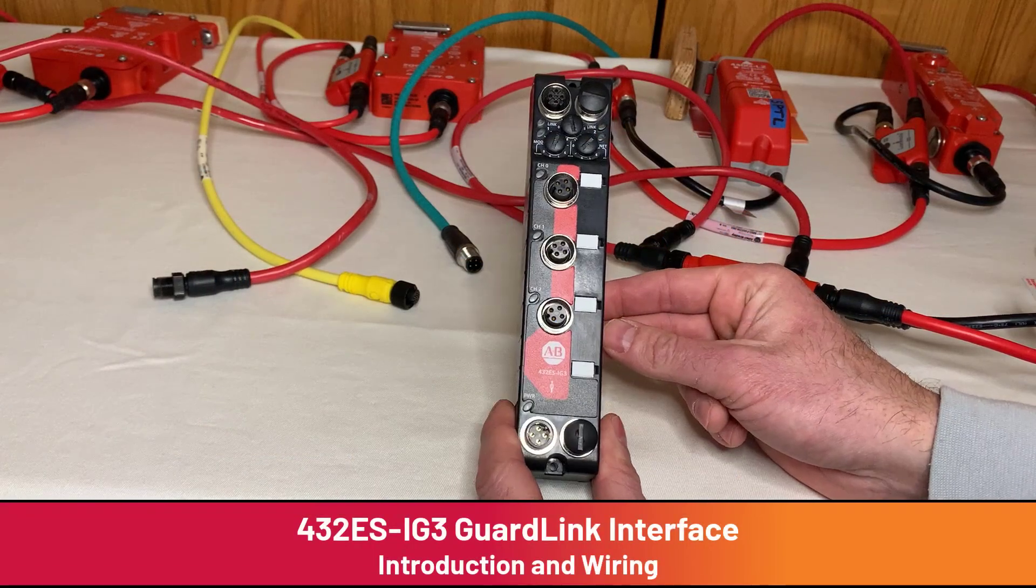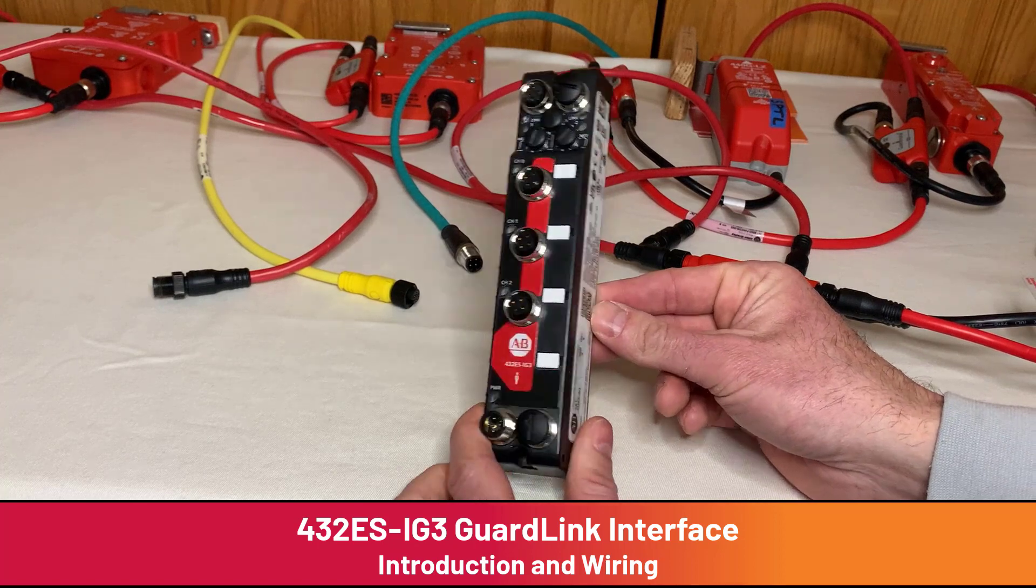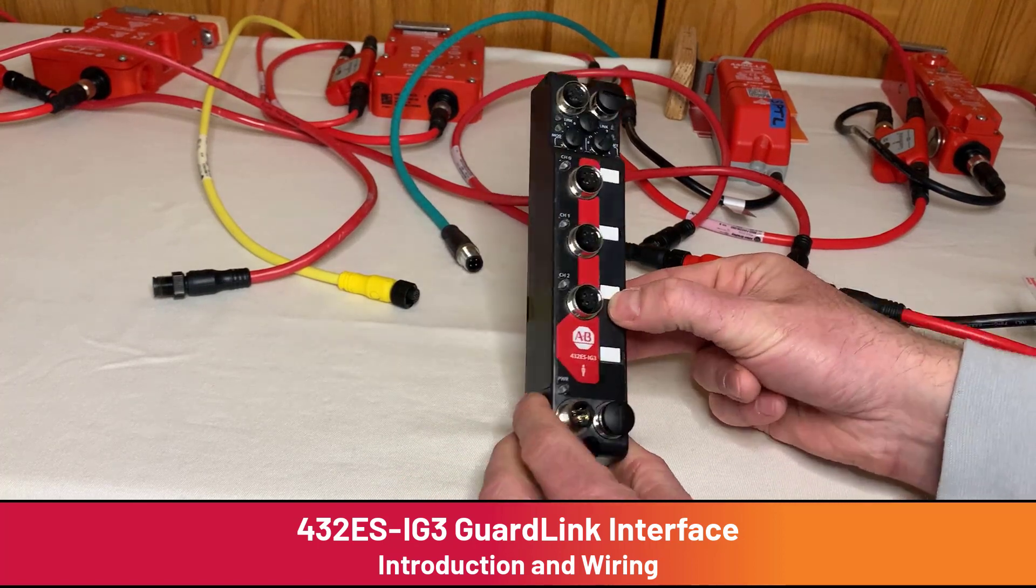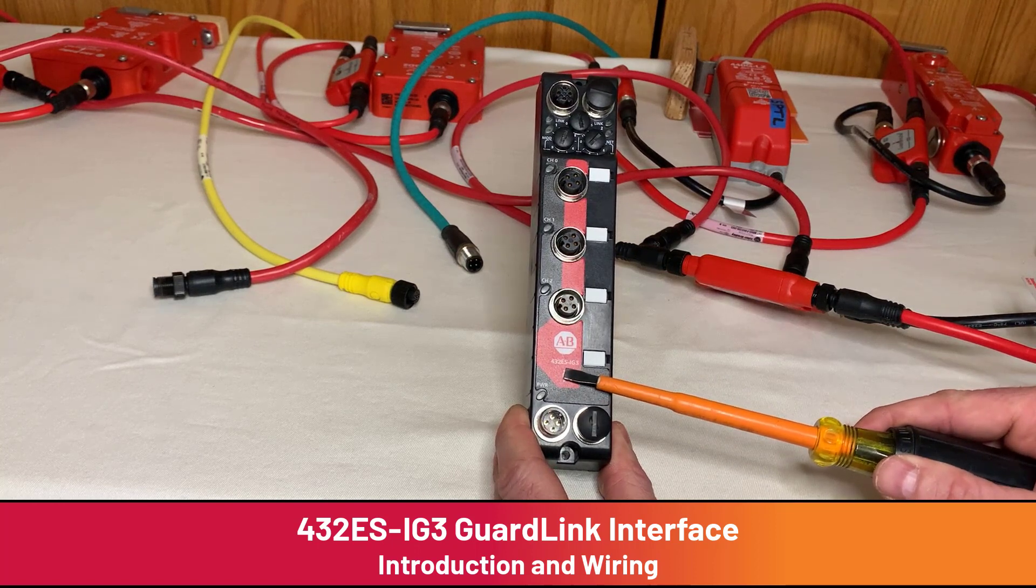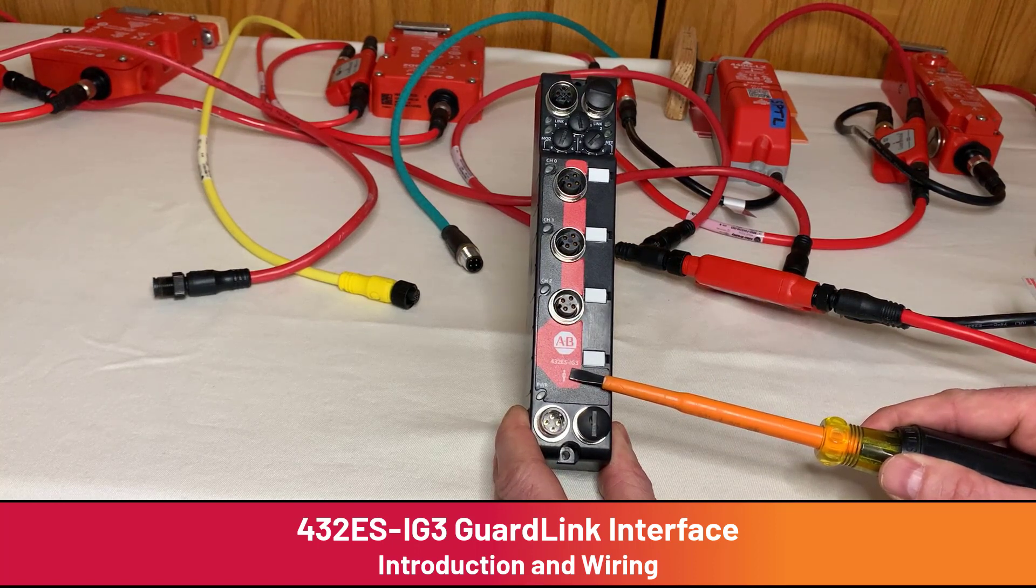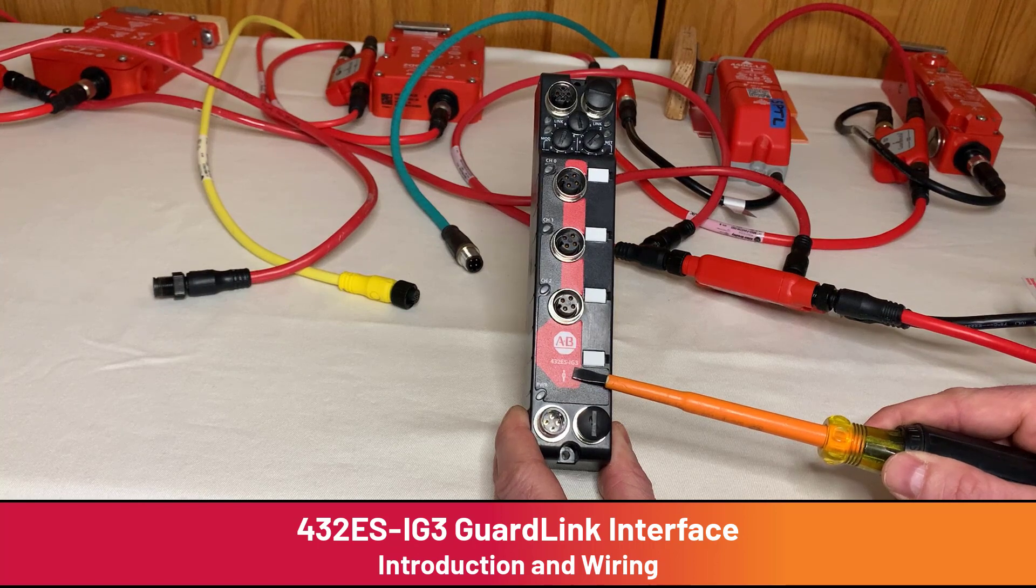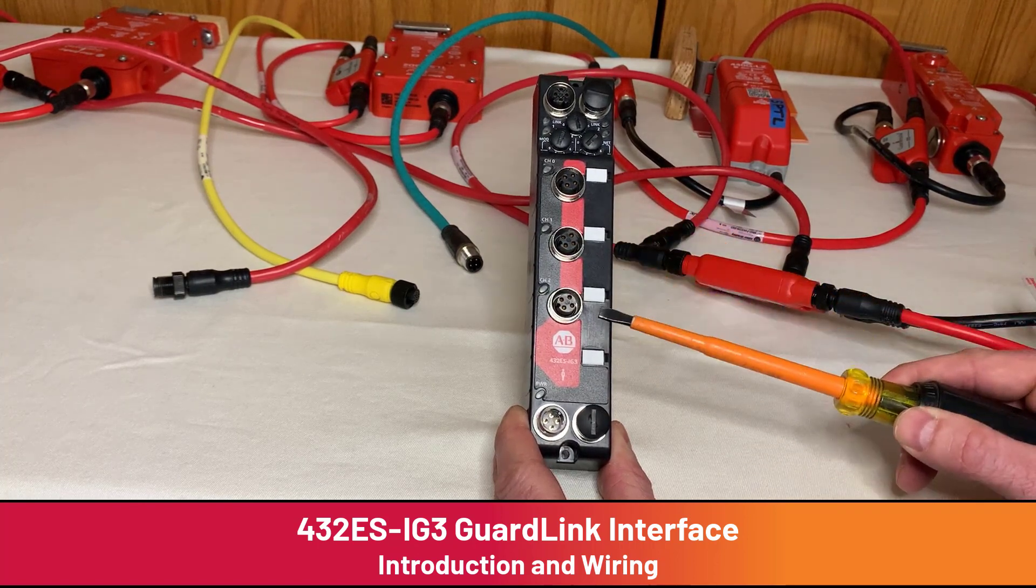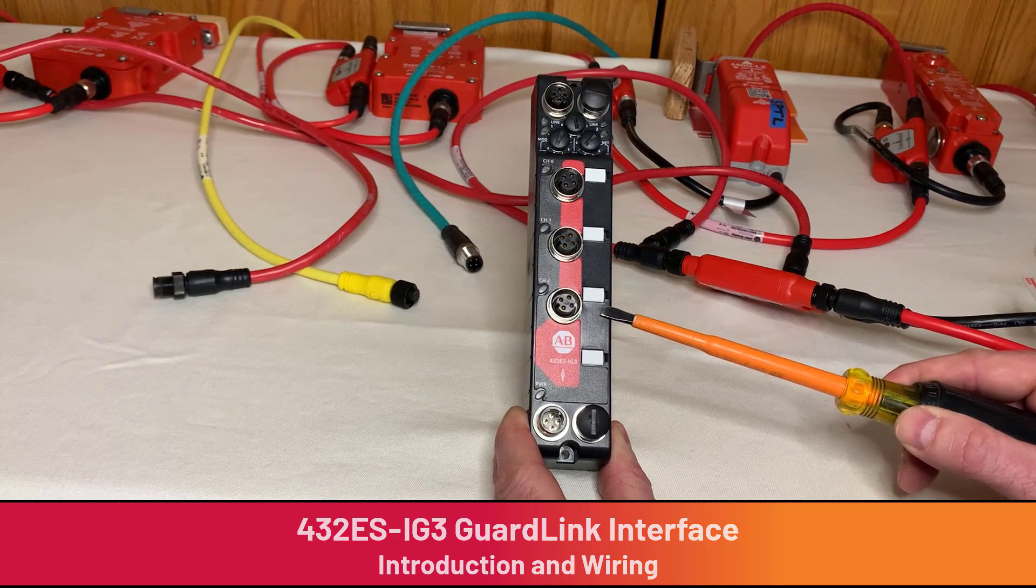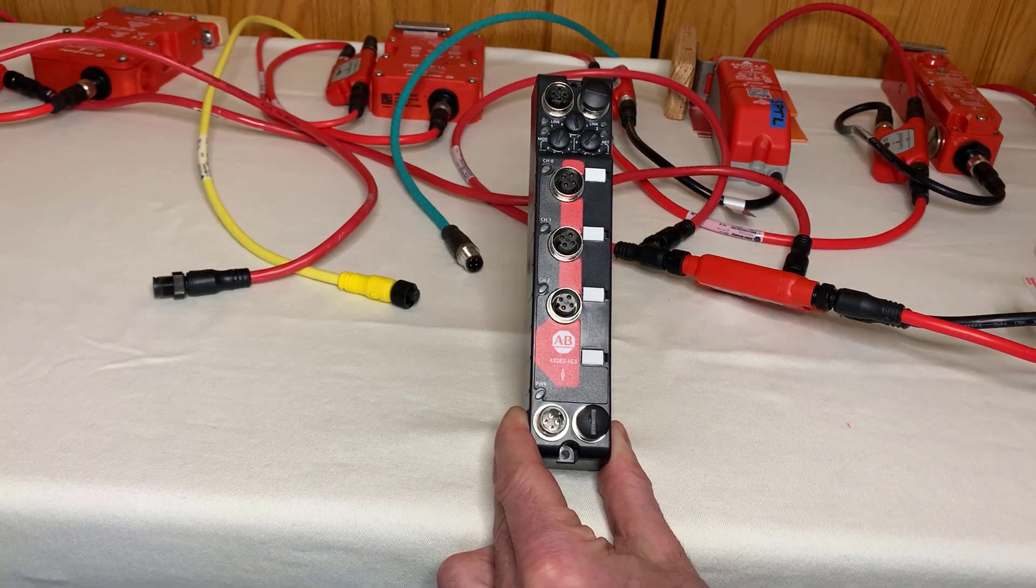The subject of today's video is the 432ES IG3 GuardLink Interface. 432 is the Bulletin number, ES is for Ethernet IP Safety, I is for Input, G is for GuardLink, and 3 is for 1, 2, 3 safety inputs rated up to SIL 3 or Category 4 PLE.